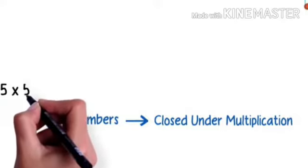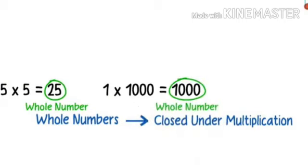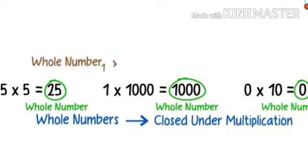5 times 5 is 25, a whole number. 1 times 1000 is 1000, a whole number again. Let's involve the whole number 0. 0 times 10 is what? When you multiply any number with 0, we get 0 again. So it's 0. We take any two whole numbers and multiply them, the answer that we get will always be a whole number.